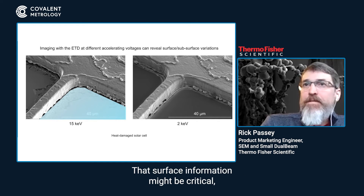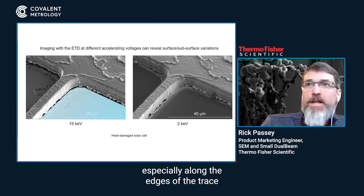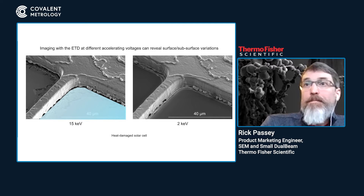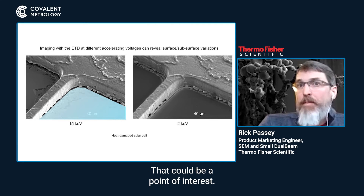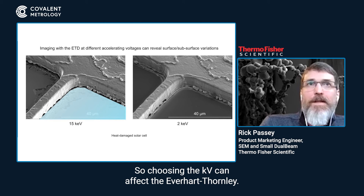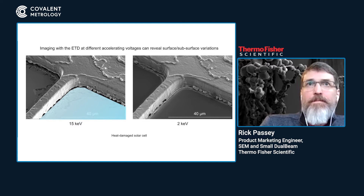That surface information might be critical, especially along the edges of the trace where the trace itself meets the gallium nitride. You can see a bit more definition there — that could be a point of interest. So choosing the kV can affect what you see with the Everhart Thornley.